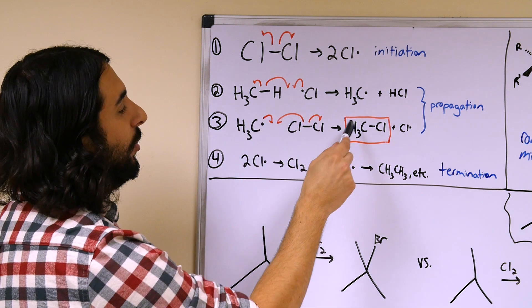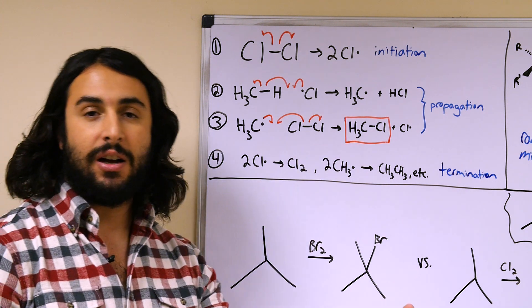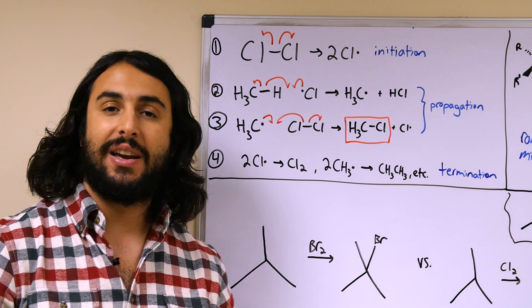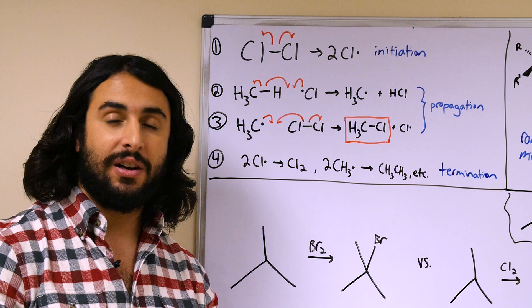This leaves another radical that can get another chlorine, so then we could have a dichlorinated or a trichlorinated or even tetrachlorinated product.